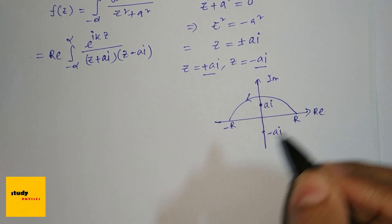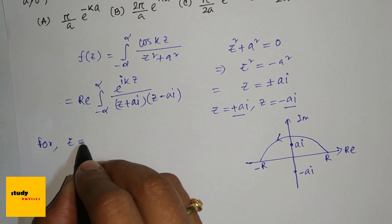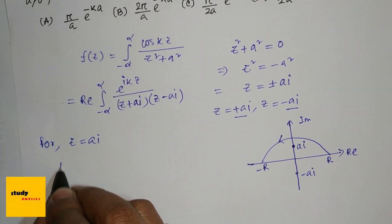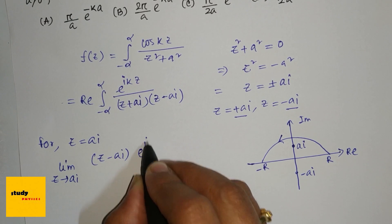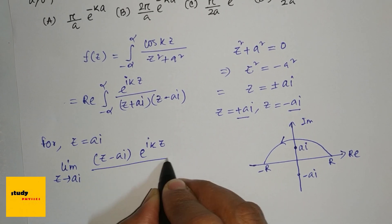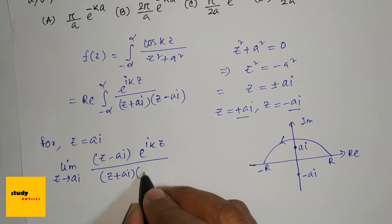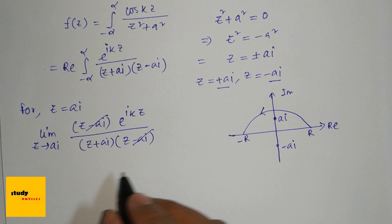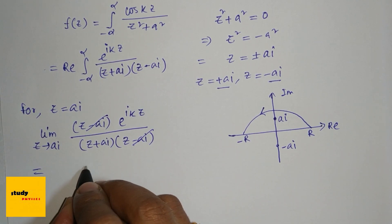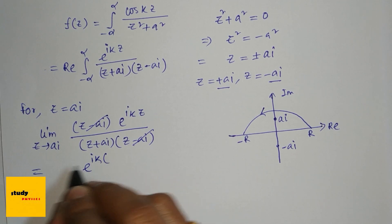For z = ai, we take the limit as z approaches ai of (z - ai) times e^(ikz)/[(z + ai)(z - ai)]. The (z - ai) terms cancel out, giving e^(ikz)/(z + ai). Substituting z = ai, we get e^(i·k·ai)/(2ai), which equals e^(-ka)/(2ai).